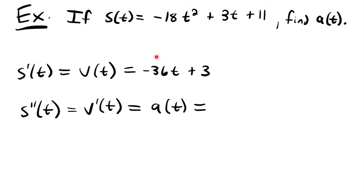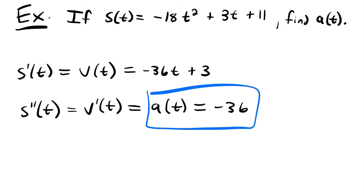Now let's take the derivative of the velocity function to find acceleration — the same as the second derivative of our position function. The derivative of negative 36t is negative 36, and the derivative of 3 is 0, so we are already done. Our acceleration function is just negative 36. So if you're given a position function and want to find acceleration, you take two derivatives. That's all I had on these examples for higher order derivatives. If you have any questions, feel free to leave them in the comments. I will see you next time.